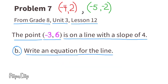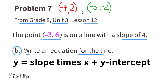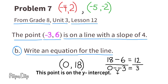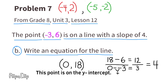B: Write an equation for the line. Y equals slope times X plus the Y-intercept. The slope is 4. To find the Y-intercept, when X equals 0, I think the ordered pair is 0 and 18. Checking: 18 minus 6 equals 12, and 0 minus negative 3 equals 3; 12 divided by 3 equals 4, confirming the slope. The Y-intercept is 18. So the equation of the line is Y equals 4X plus 18.